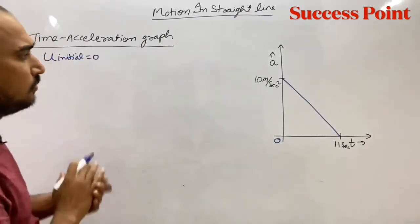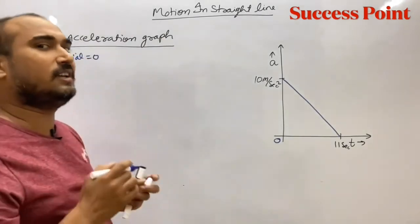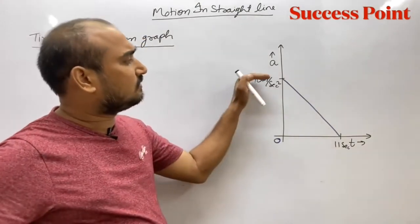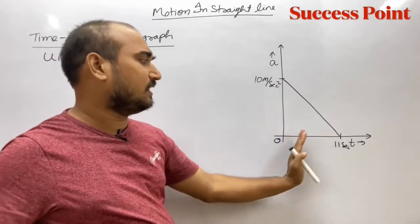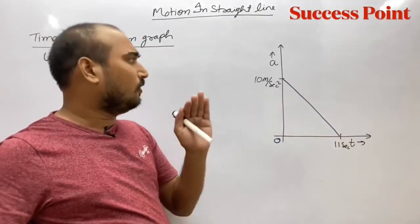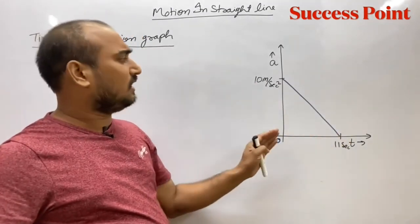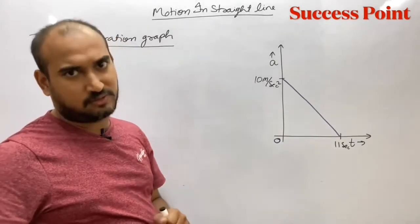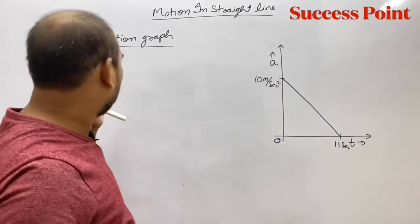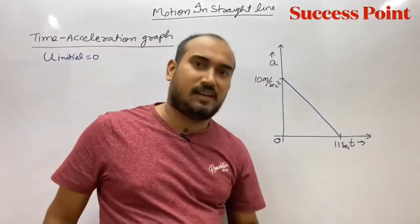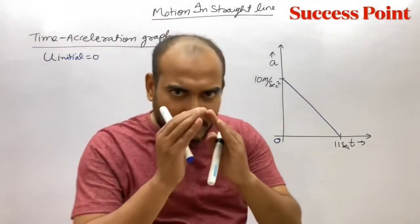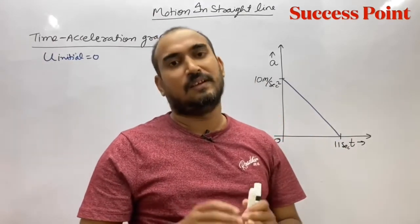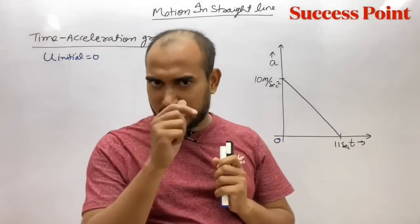You're asking in this interval, meaning in these 11 seconds, how much velocity will the body gain and what is the maximum velocity. It's straightforward - when velocity is zero, the change you make to the body's velocity will become the final velocity.